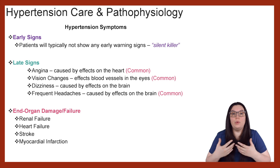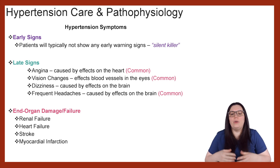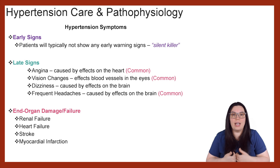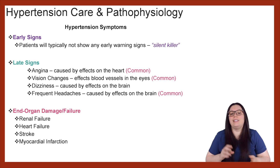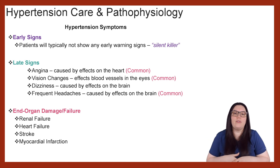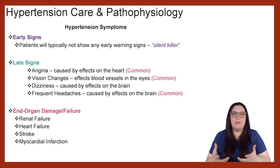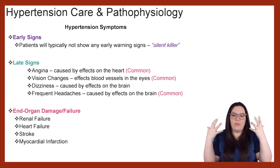When it comes to late signs, we can see angina — that pressure, that crushingness in the chest, that heart pain — usually caused by effects on the heart. You also start to see visual changes, since hypertension affects the blood vessels in the eyes. Dizziness can also occur because of the constriction on the brain. And then lastly, frequent headaches absolutely can be a common late sign because of those effects on the brain.